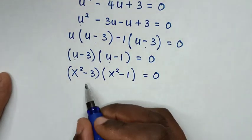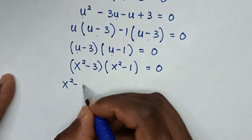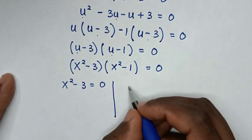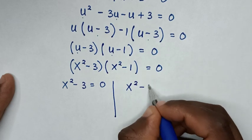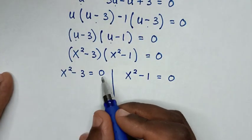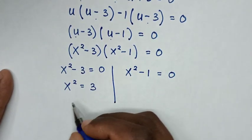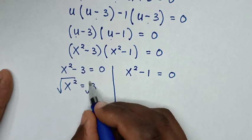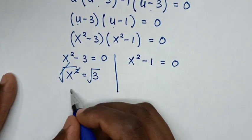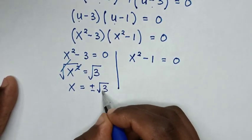This gives two solutions. First solution: x² - 3 = 0, so x² = 3. Applying square root to both sides gives x = ±√3.